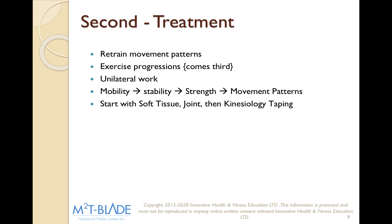From there, we want to retrain movement patterns, starting off with unilateral work. This fourth point is probably our most important: we want to start with mobility, stability, strength, and movement patterns. We always want to find out what's not moving and make it move better — that's our mobility.